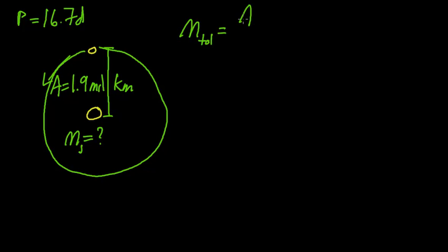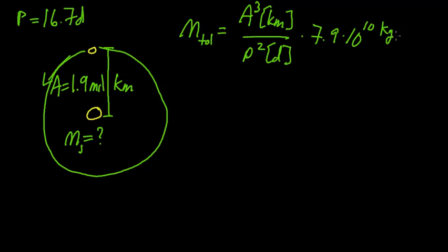This is going to be equal to A cubed in kilometers, divided by P squared, measured in days, times the constant 7.9 times 10 to the 10 kilogram day squared per kilometer cubed.